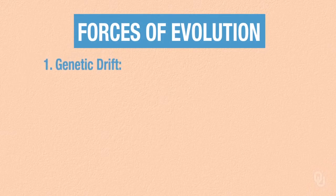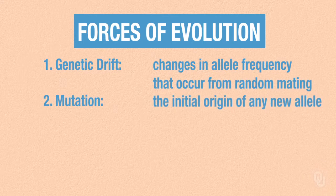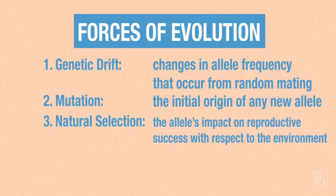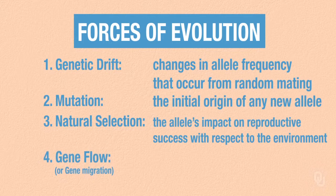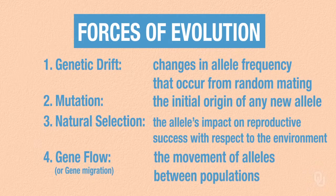In population genetics, natural selection remains a fundamental mechanism of evolution, but it's certainly not alone. Boiled down, there are essentially four forces or mechanisms of evolution. The first is genetic drift, which is the change in allele frequencies that occur from the random aspect of mating and creating the next generation. Next is mutation, which is the initial origin of any new allele. Third is natural selection, which refers to the allele's impact on reproductive success with respect to the environment. Fourth is gene flow, or gene migration, the movement of alleles between populations.